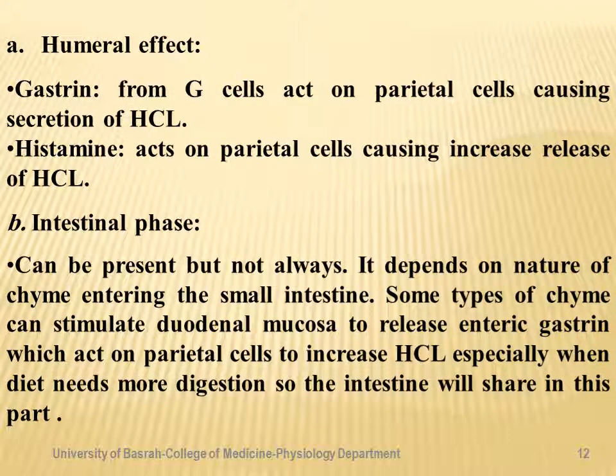In the gastric phase, gastrin hormone from G cells acts on the parietal cell causing increased HCl secretion. Histamine also acts on the parietal cell via H2 receptors, causing increased release of HCl.